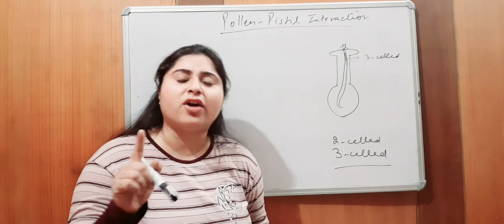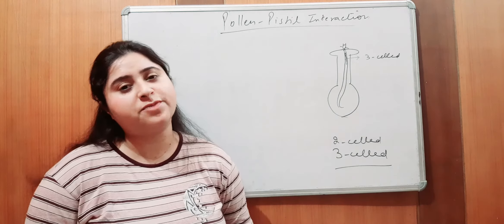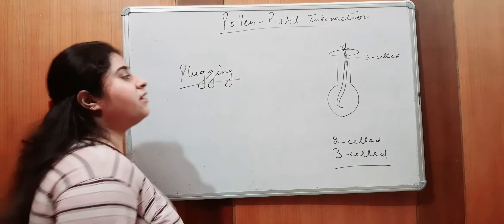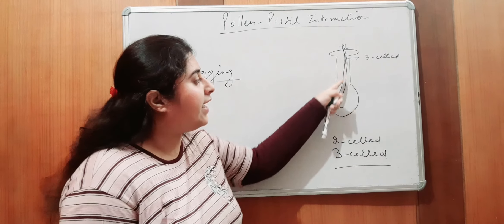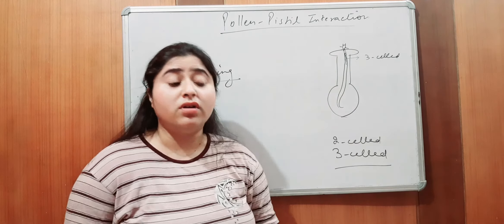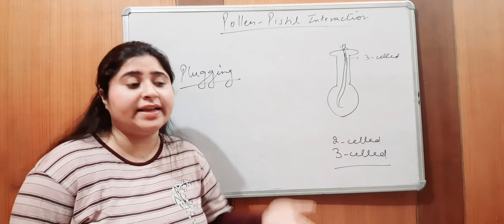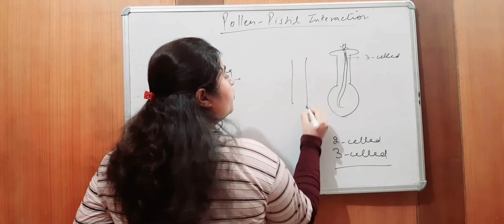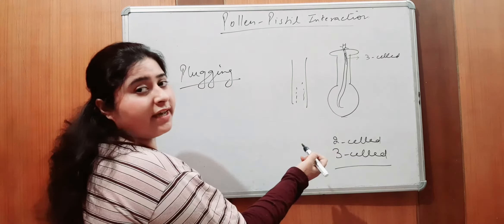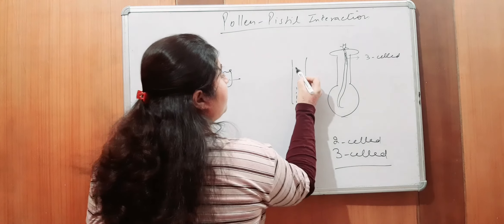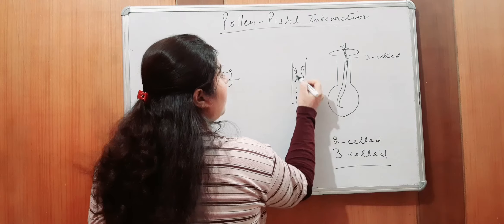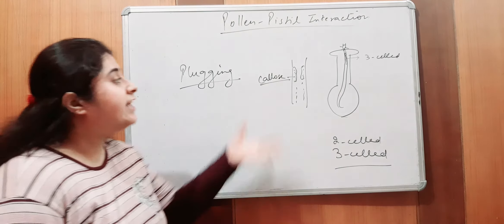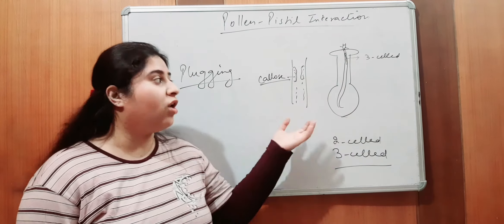Pollen-pistil interaction. I will tell you about one concept which is not given in your NCERT, but you must know. About the plug-in. Yes. Plug-in. What is that? What is this plug-in? So, here the pollen grains, here the male gametes are reached. So, the male gametes will not go back. So, here the walls are present which are the callose walls. They are made up of callose. So, they prevent the backward moving of the pollen grains. And that process is called as plug-in.